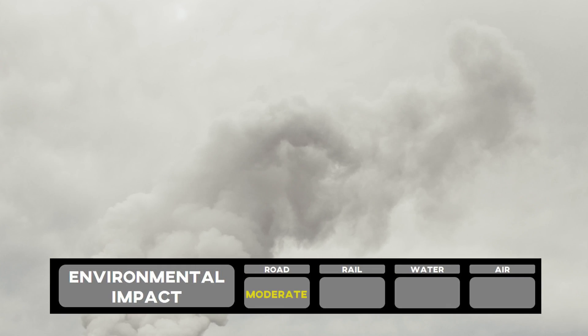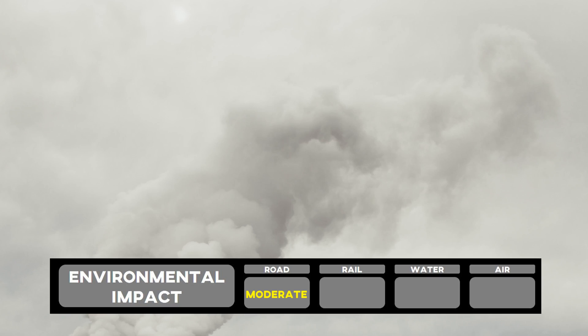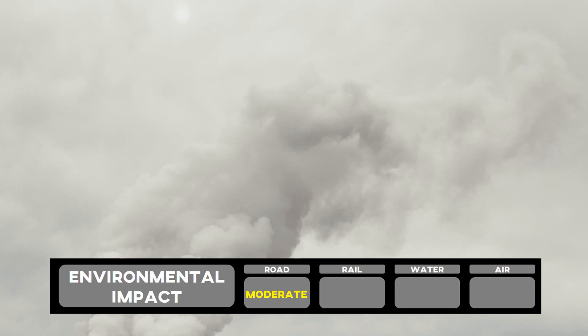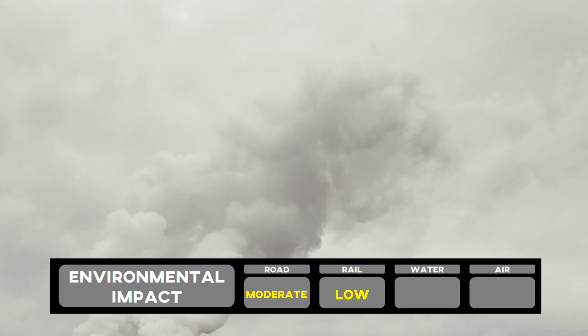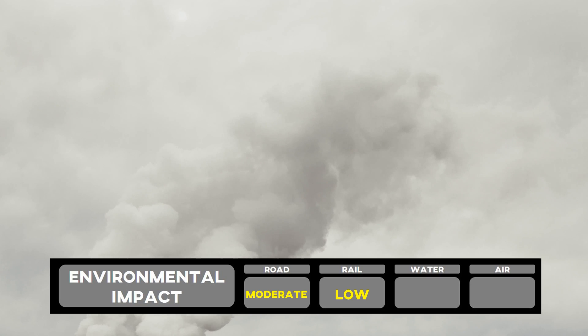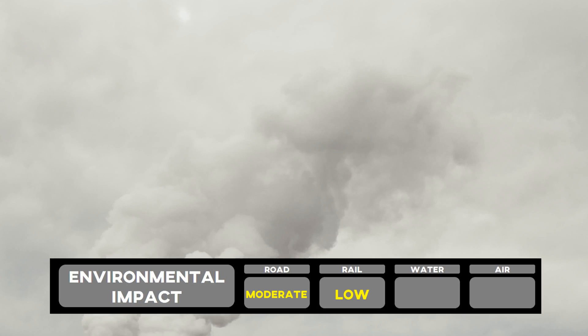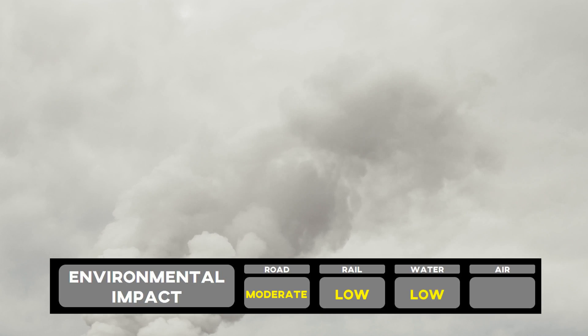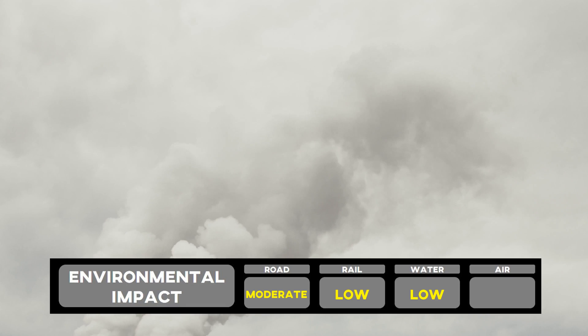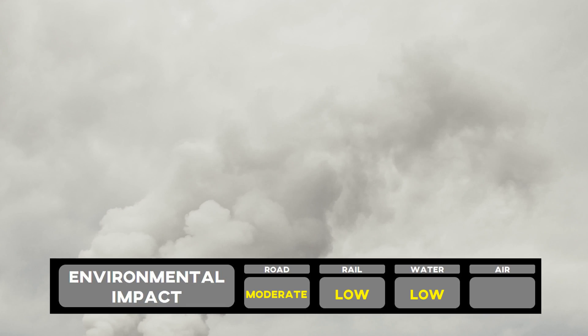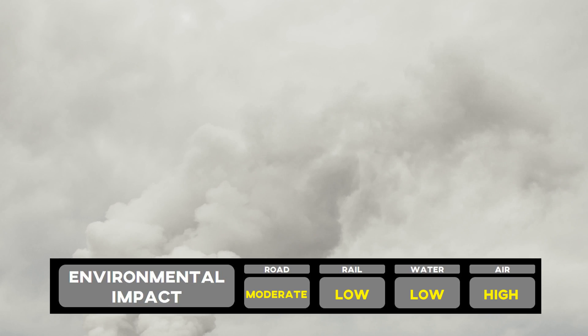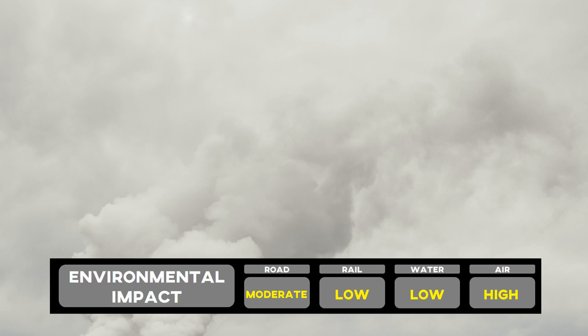Air transport has the highest load-to-fuel ratio among all modes, making it efficient for long-distance and time-sensitive cargo and passengers. Let's talk about environmental impact. Road transport has a moderate environmental impact due to emissions from vehicles. Rail transport has a low environmental impact as it is energy-efficient and emits few pollutants. Water transport has a low environmental impact due to the efficiency of large vessels and the use of cleaner fuels. Air transport has a high environmental impact due to high fuel consumption and emissions.